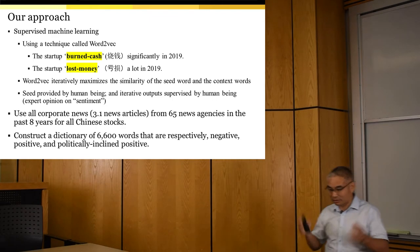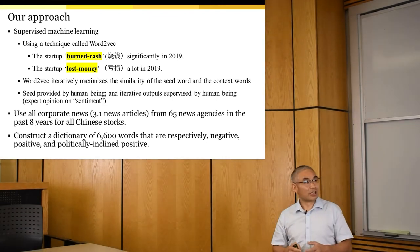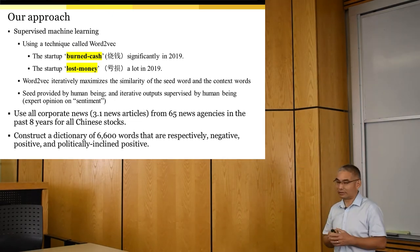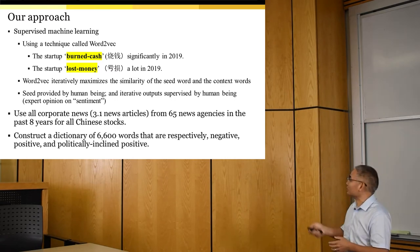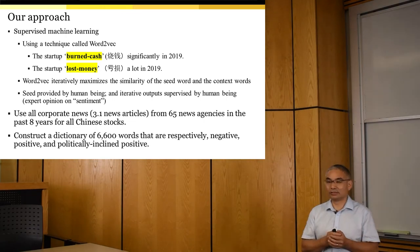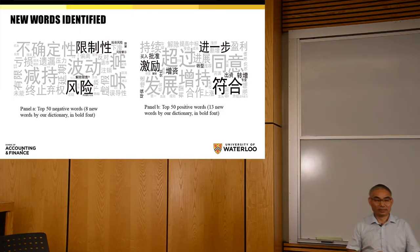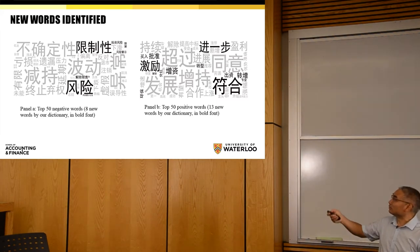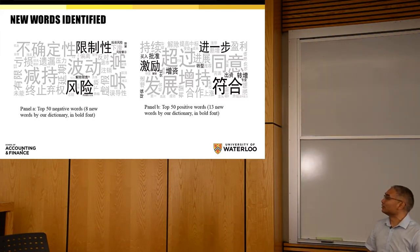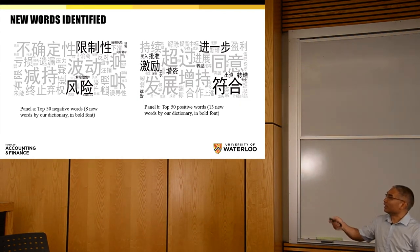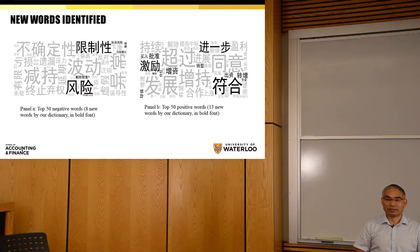The big data we use consists of corporate news articles from the past eight years for all Chinese listed firms from 65 news agencies — a total of 3.1 million news articles. We construct a dictionary of 6,600 words categorized into positive, negative, and political terms. Showing the top 50 negative and top 50 positive words, we uncover 8 new words in the negative category and 13 new words in the positive category beyond existing Chinese dictionaries.